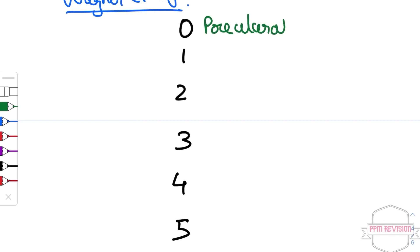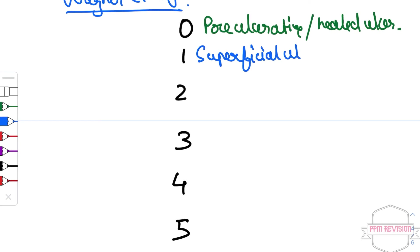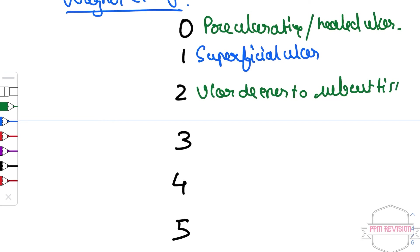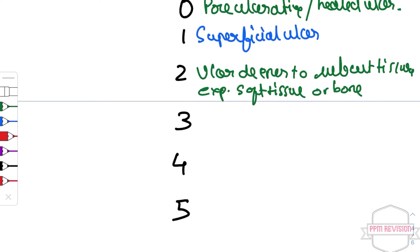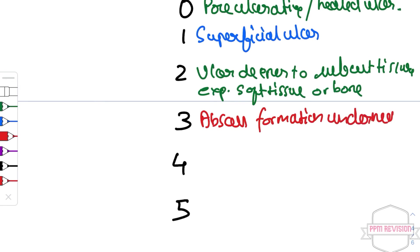Under Wagner's classification: Grade 0 is pre-ulcerative or healed ulcer. Grade 1 is superficial ulcer. Grade 2 is an ulcer deeper than subcutaneous tissue, exposing soft tissue or bone. Grade 3 is abscess formation underneath or osteomyelitis.